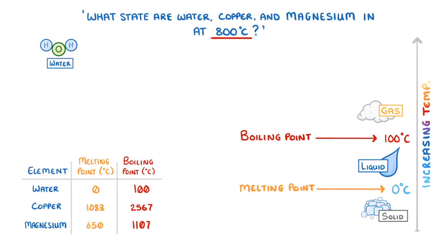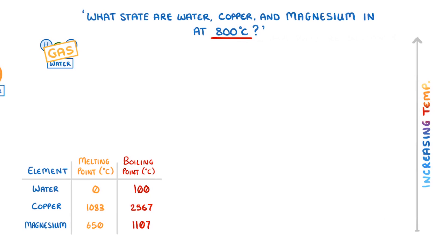So at 800 degrees water would definitely be a gas. Then for copper we can see that it doesn't melt until 1,083 degrees, so at 800 degrees it must still be a solid.